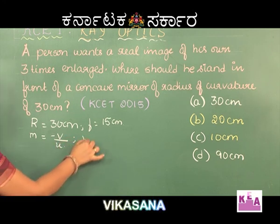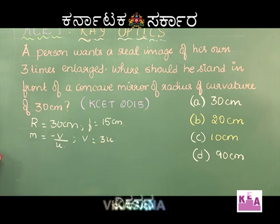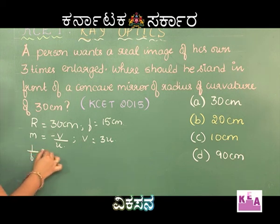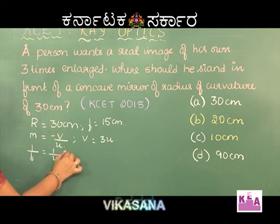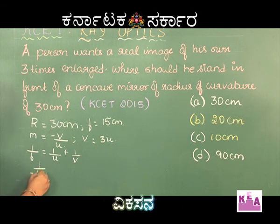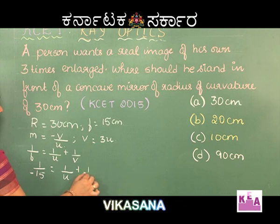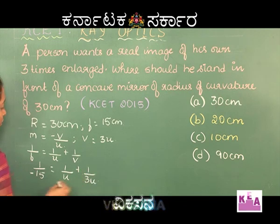From this, we can write v is equal to 3 times u. So using the mirror formula, what we can write is: 1 by f is equal to 1 by u plus 1 by v. Now students, what we can notice here is 1 by minus 15 — the negative sign indicates that it is for a concave mirror — which is equal to 1 by u plus 1 by 3u.